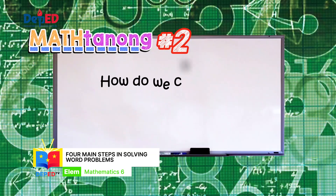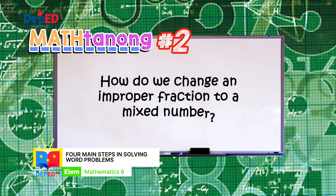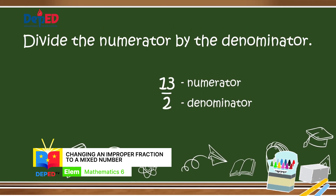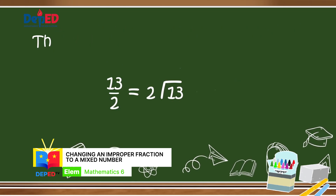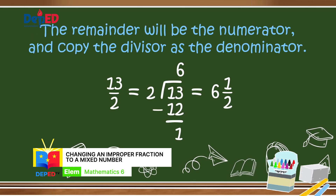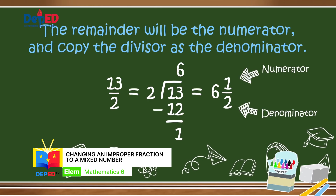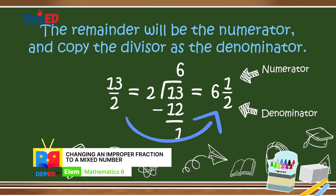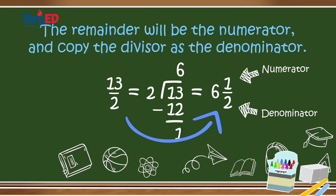Matanong number two: How do we change an improper fraction to a mixed number? In changing an improper fraction to a mixed number, we divide the numerator by the denominator. The quotient will be the whole number. The remainder will be the numerator, and copy the divisor as the denominator. For example, 13 halves: 13 divided by 2 equals 6 with a remainder of 1. So 13 halves is equal to 6 and 1 half.